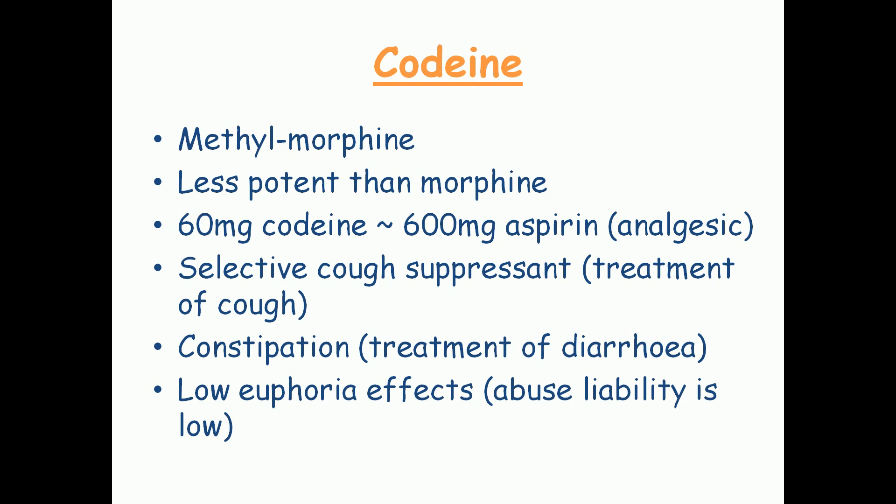Codeine has a more selective cough suppressant action and is used in the treatment of cough. Codeine also causes constipation as a side effect, which can be utilized in the treatment of diarrhea. The euphoric effects produced by codeine are very much less compared to morphine, so the abuse liability of codeine is very low.